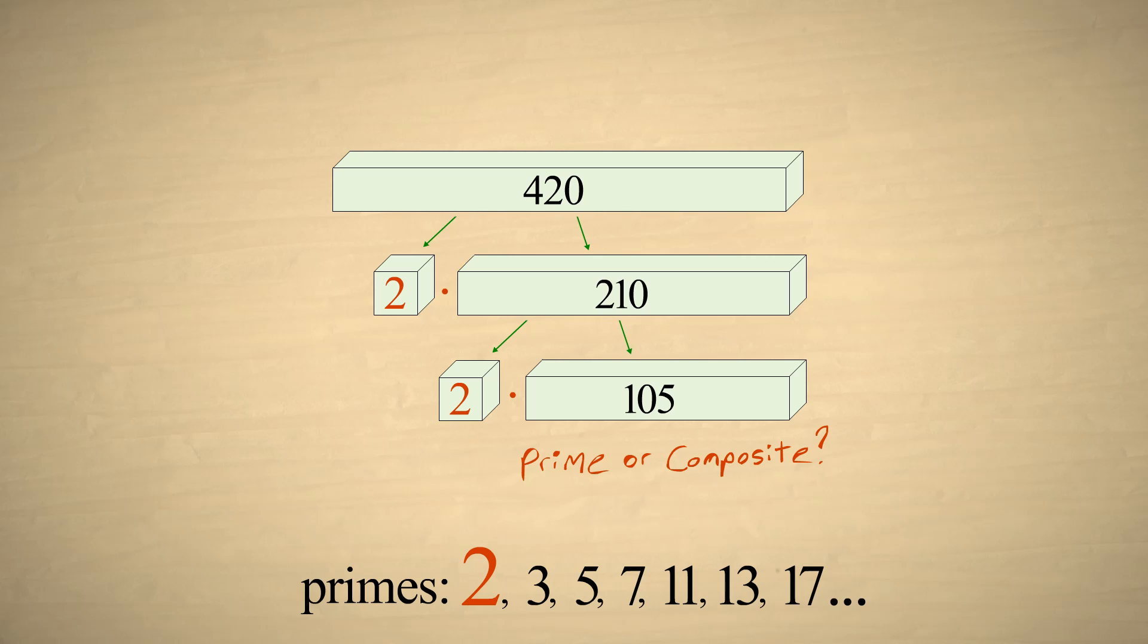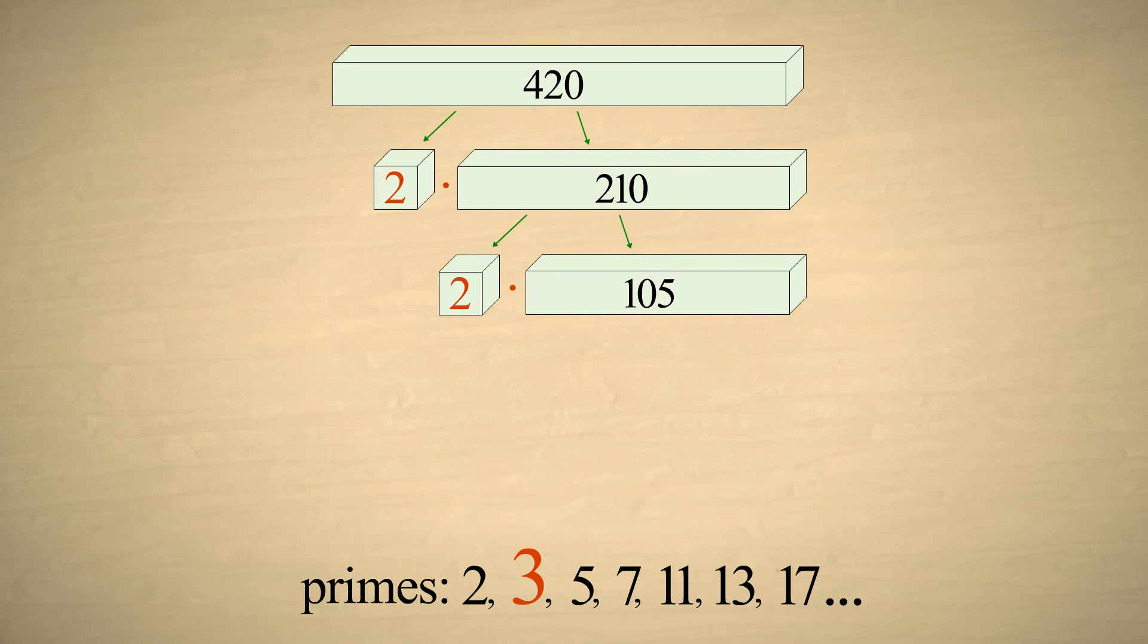We know that 2 is not a factor of 105 because 105 is not even. But it may be divisible by the next prime, 3. Remembering the trick from our last lecture, if the sum of a number's digits is divisible by 3, then that number is divisible by 3. Since the digits of 105 add up to 6, and 6 is divisible by 3, we know that 105 is divisible by 3. Therefore, 3 is a factor.